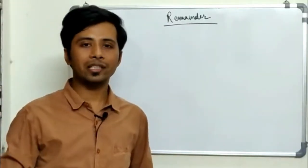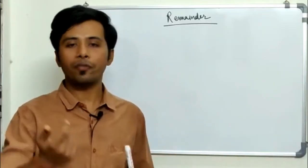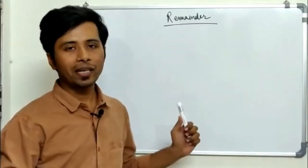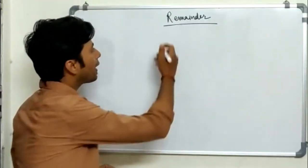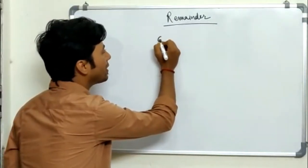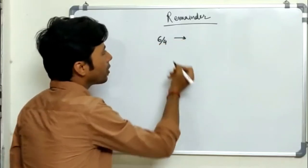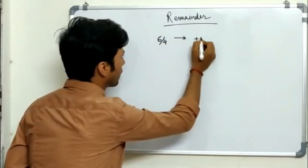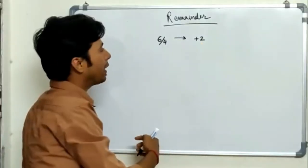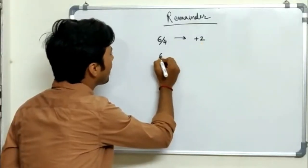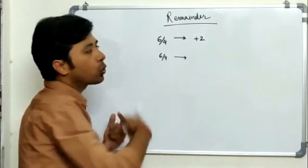Before we solve these kinds of questions, we need to know some basic concepts of negative remainder. Now, if I ask you: when 6 is divided by 4, what will be the remainder? That is going to be positive 2. Now when I talk about the negative remainder — when 6 is divided by 4, what is the negative remainder?